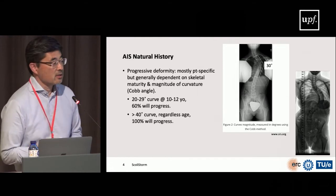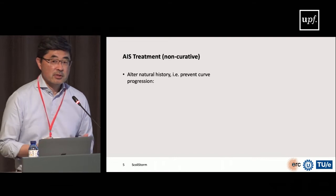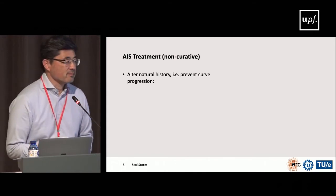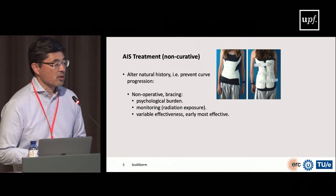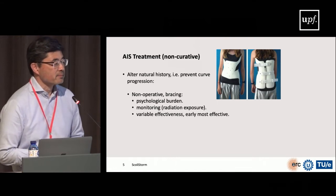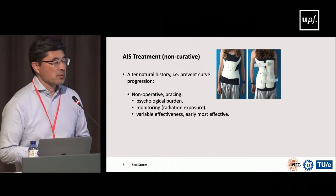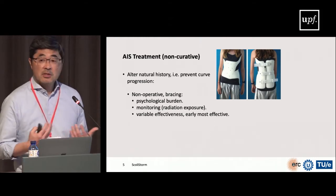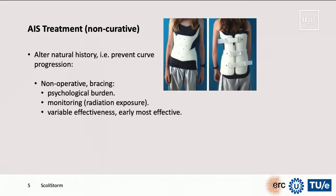Because of this progressive natural history, the goal of treatment is not cure but stopping progression. Non-operative treatment involves bracing — for example the Boston brace, worn either 8 hours during the day or during sleep. This creates a huge psychological burden, making patients stand out from peers. Monitoring disease progression between ages 10–18 requires multiple X-rays or CT scans, exposing young patients — especially girls — to significant ionizing radiation. Treatment efficacy is variable: the earlier and more consistently the brace is worn, the better the outcome.